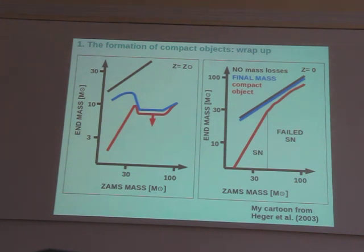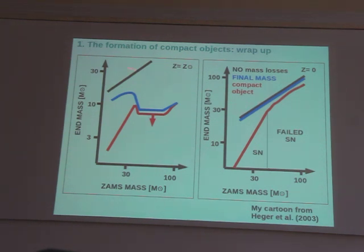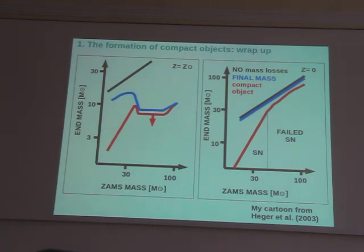In both plots you see a black line — the line where the final mass equals the initial mass, shown just as a reference. The blue line is the actual final mass of the star before the supernova, and the red line is the mass of the compact object. At solar metallicity, the blue line — the mass of the star just before the supernova — is much smaller than the initial mass, well below the black line. This is because stellar winds are efficient in solar metallicity stars, so the star has lost more than half its mass during its life.